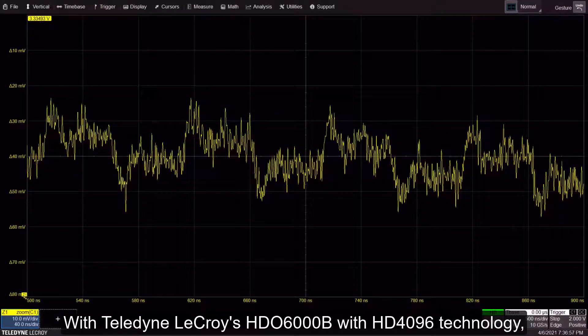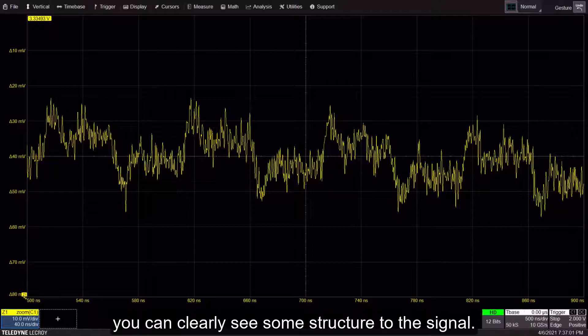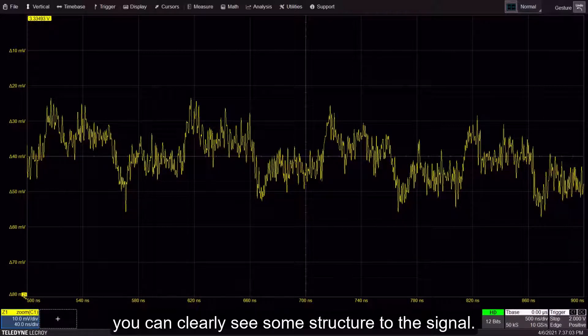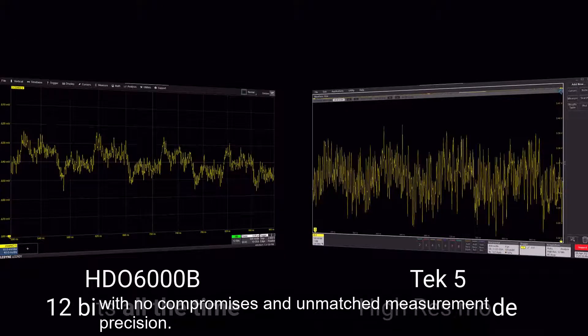With Teledyne LeCroy's HDO6000B with HD4096 technology, you can clearly see some structure to the signal. That is the power of 12 bits all the time with no compromises and unmatched measurement precision.